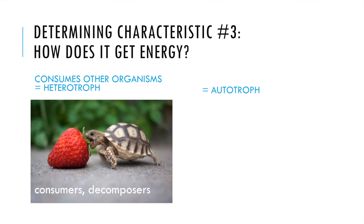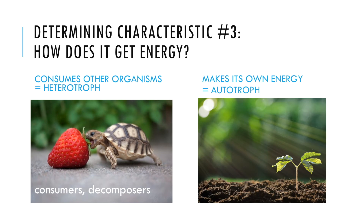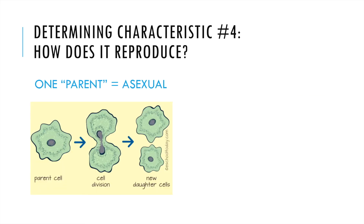The next thing we use to classify is how an organism gets its energy. If it consumes other organisms, that means it's a heterotroph. Consumers and decomposers both have to consume or use other organisms' nutrients in order to survive. Autotrophs, on the other hand, can make their own energy using non-living things — for example, plants use sunlight and water, both abiotic factors, to make their sugar. They're called producers. Producers are autotrophs.